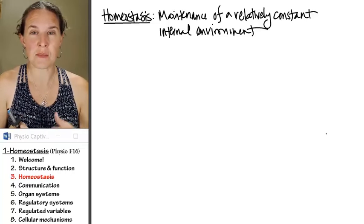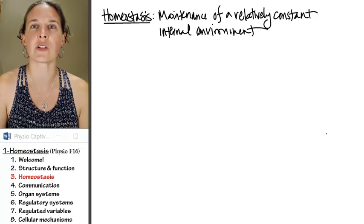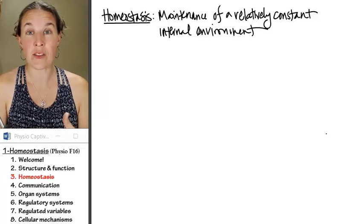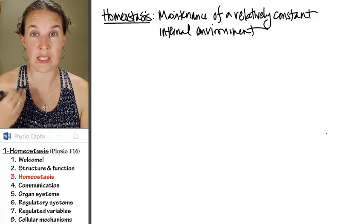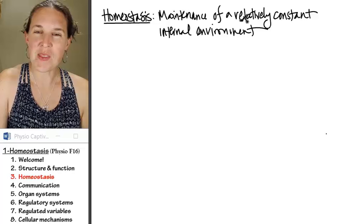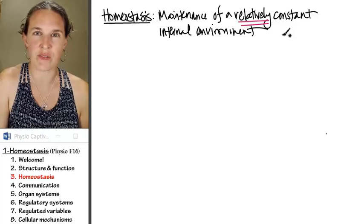Homeostasis is the maintenance of a relatively constant internal environment, and organ systems work together to maintain homeostasis in the human body. So notice that we're talking about a relatively constant internal environment.